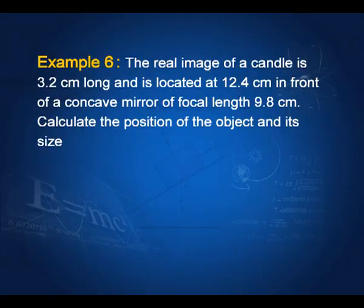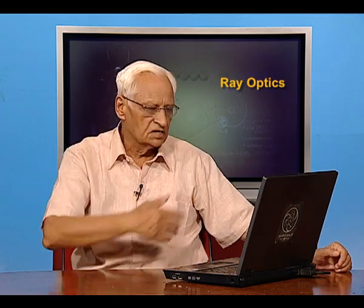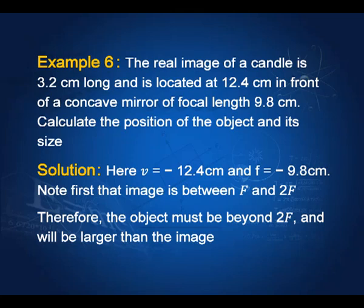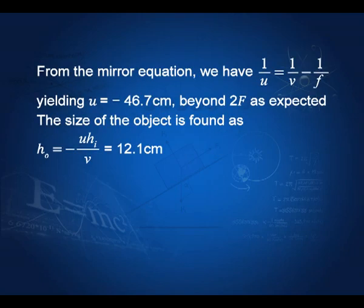Let us take an example. The real image of a candle is 3.2 centimeters long and is located 12.4 centimeters in front of a concave mirror of focal length 9.8 centimeters. Calculate the position of the object and its size. We are given v = −12.4 cm, because it is a real image and its distance must be measured towards the right — hence negative. For a concave mirror, f = −9.8 cm. We find u using 1/v + 1/u = 1/f, which gives 1/u = 1/f − 1/v.